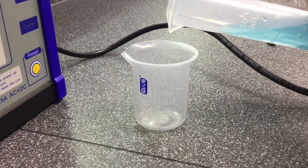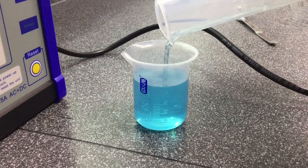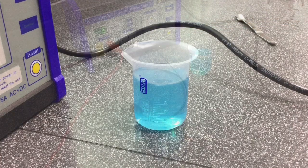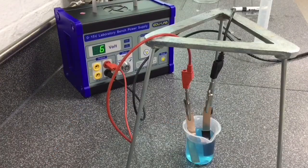We then measure 50 centimeters cubed of the copper sulfate solution into a small beaker. Using the copper electrodes we set up a simple circuit set to six volts.